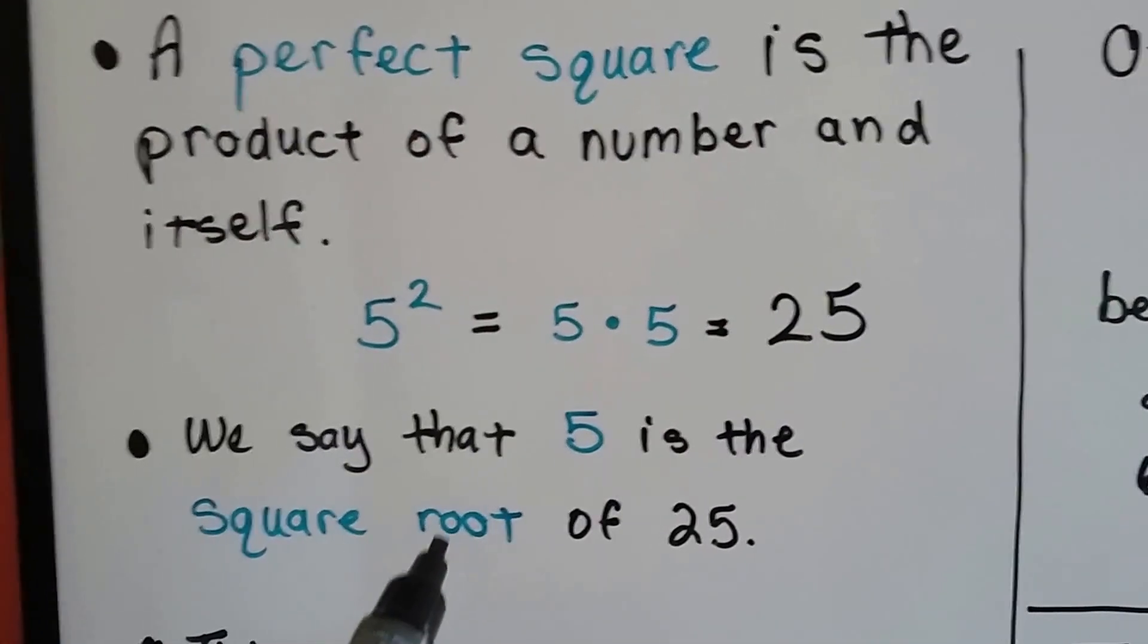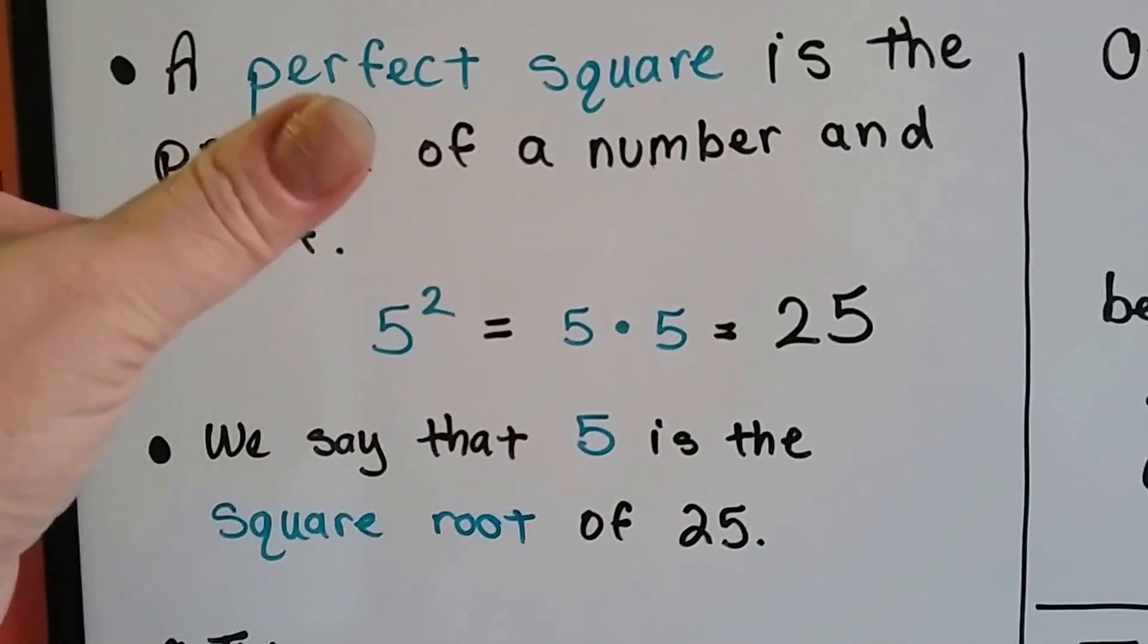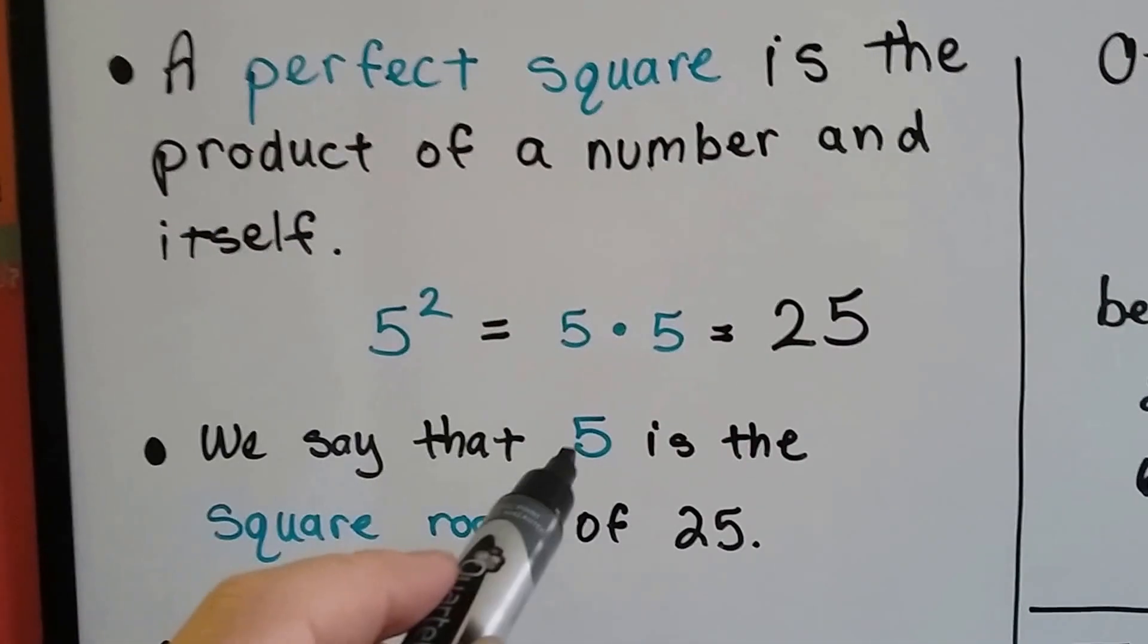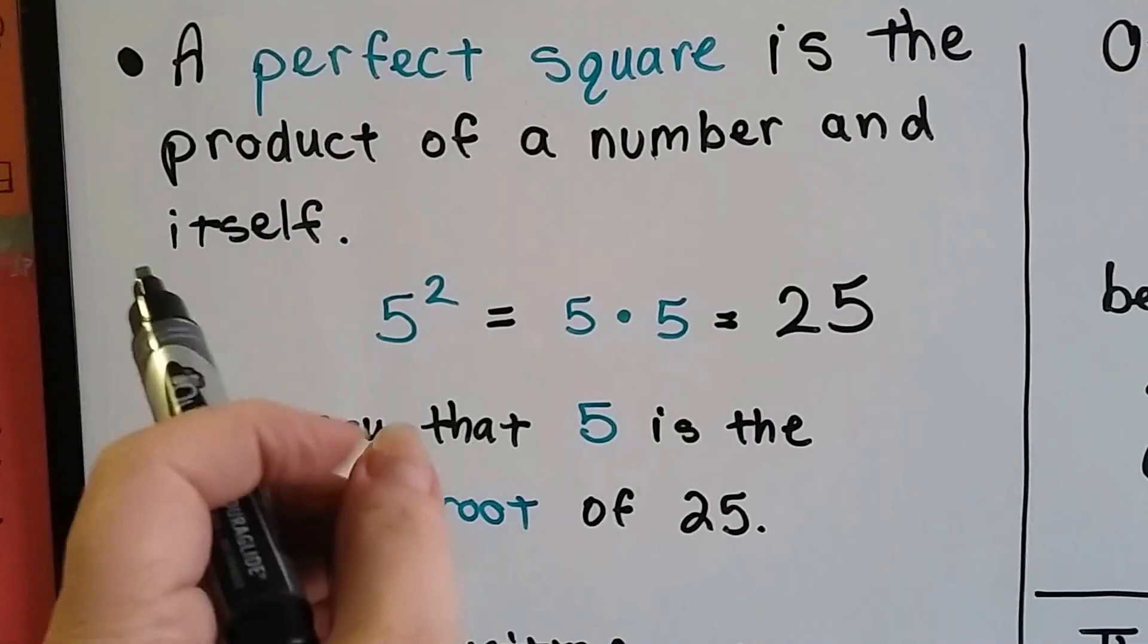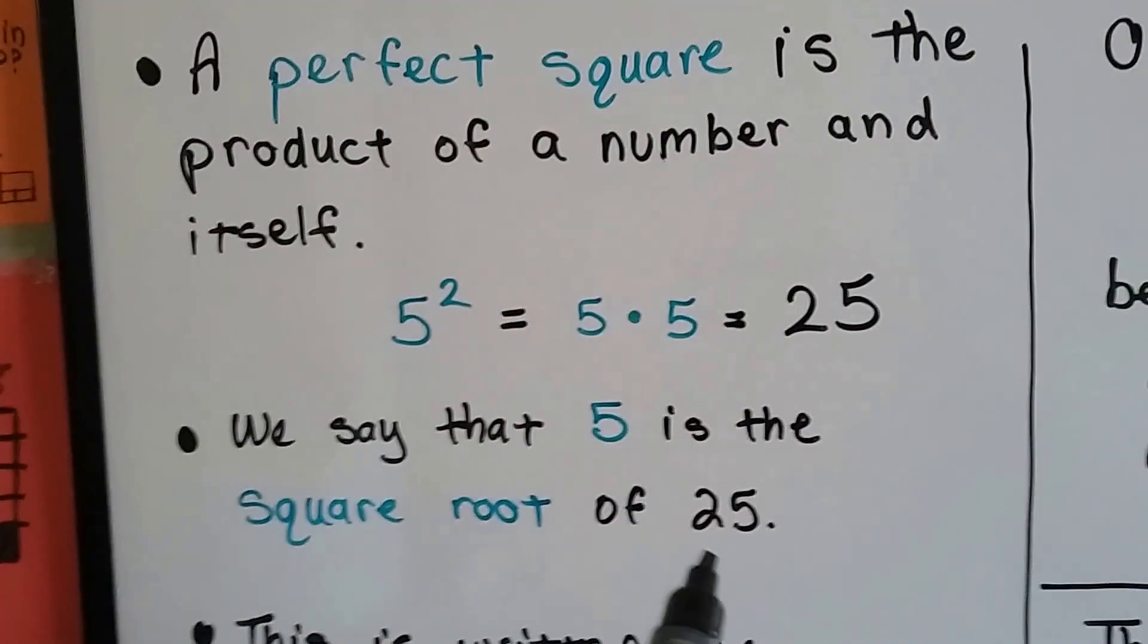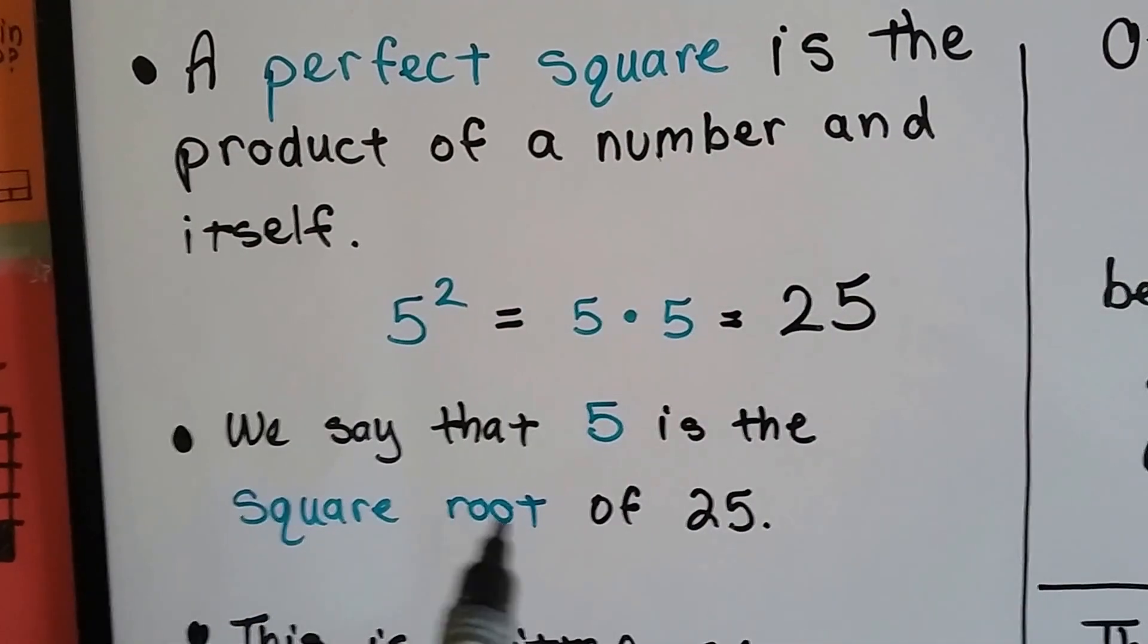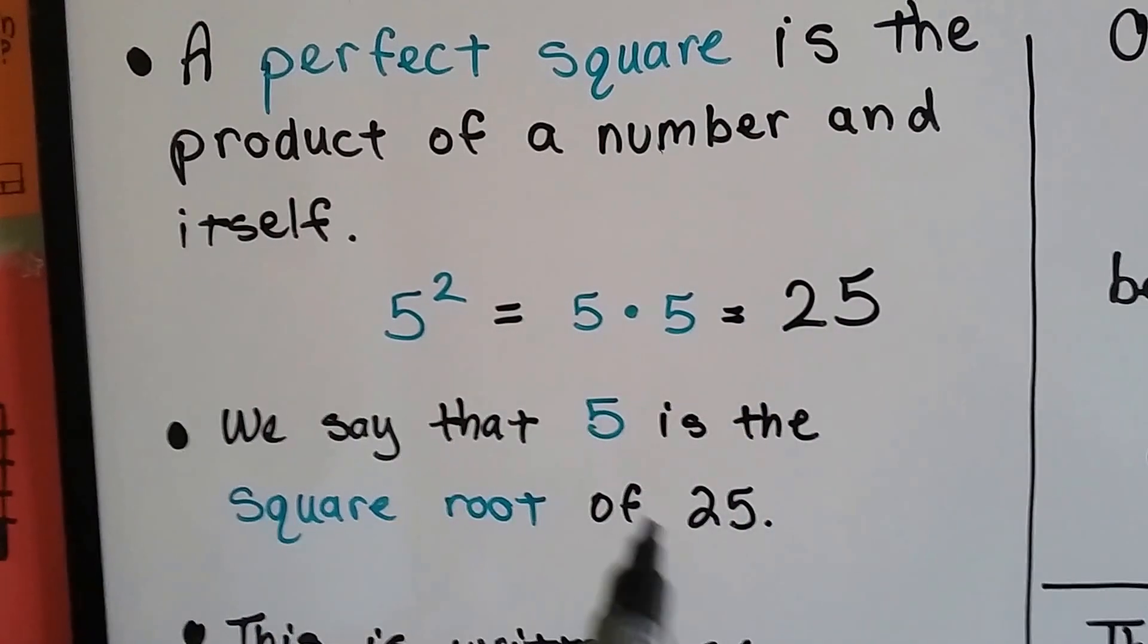Just like the root of a tree helps the tree to grow to the big thing that it is, this little five helps the 25 to expand to the big thing that it is. So the root is the smaller number.